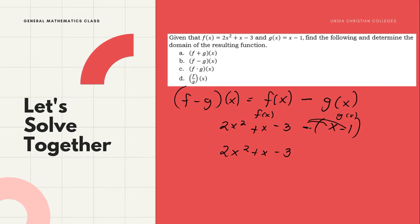According to PEMDAS, we handle parentheses first. The negative is being multiplied, so we distribute it inside. After distributing, we combine like terms. 2x² has no similar term, so write it as is.